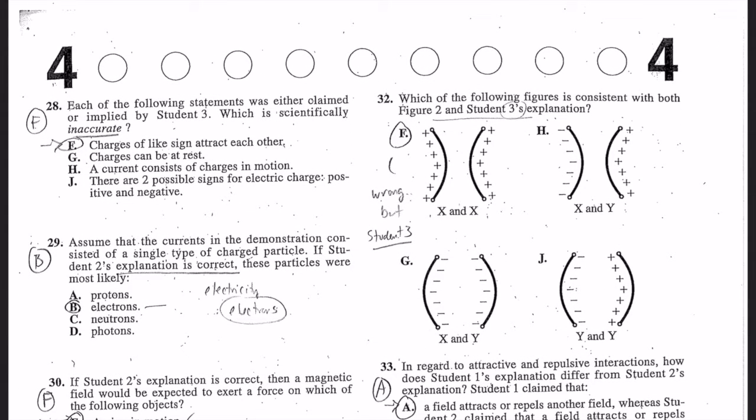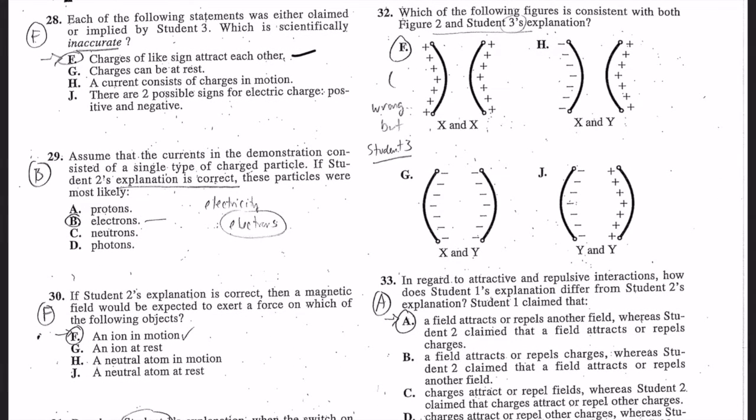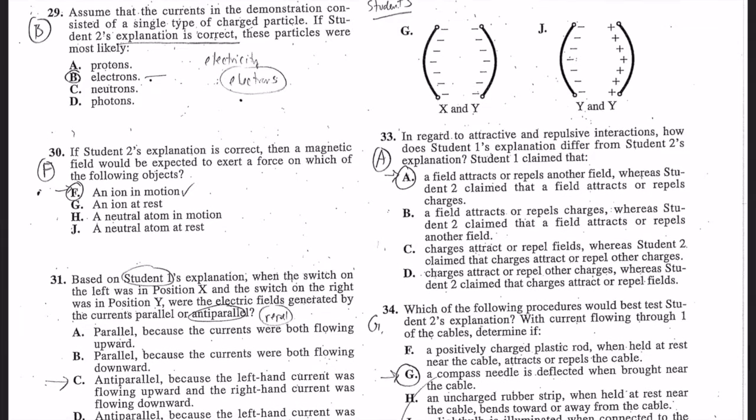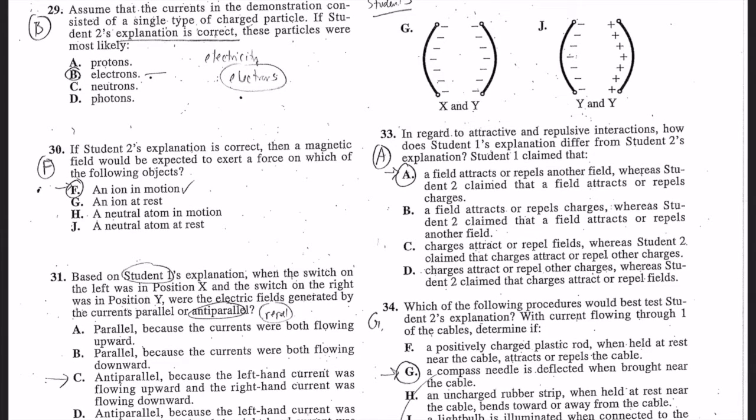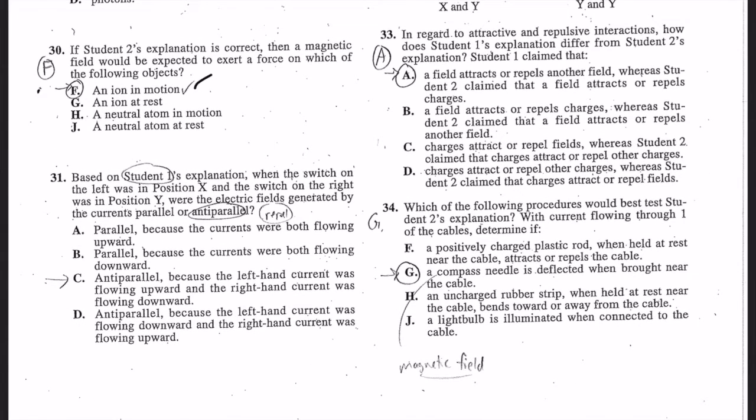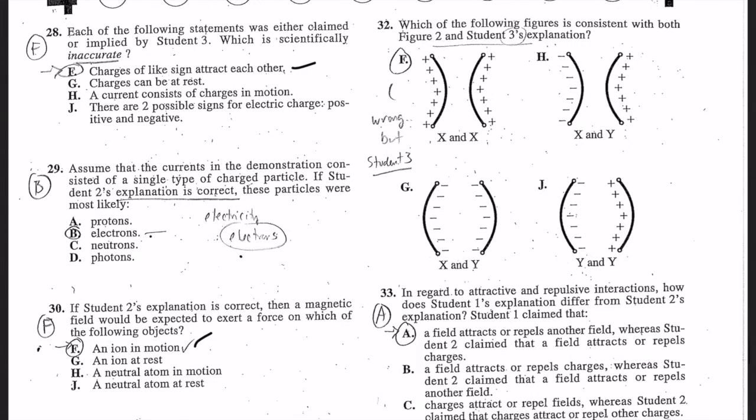Number 28: which is scientifically inaccurate? Charges of like signs attract each other - no, charges of like repel. That's why that is wrong. Number 29: it's the particles - electrons are negative. Number 30: if it's correct, then things in motion creates magnetic force, which is actually true. Number 31: student one, would they be parallel or anti? Anti, because they're opposite. Number 32: these are wrong. So if they're positive, they're consistent with both figure two and student three's. The positives should repel, not attract. So that's wrong, but that's why it's wrong - because it's student three.